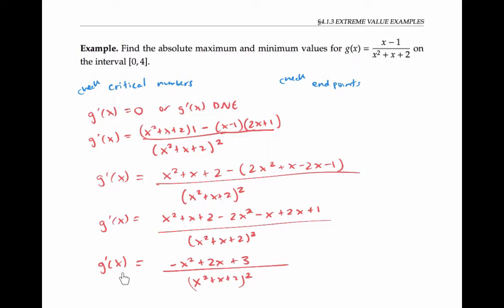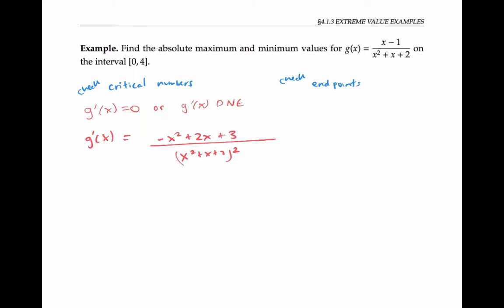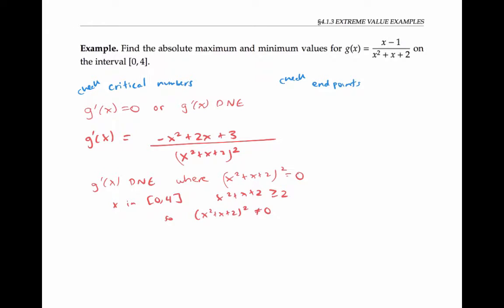Now that I've simplified the derivative, I can figure out where it's equal to zero and where it doesn't exist. The only way that g prime of x could not exist is if the denominator is zero. But on our interval, where x is between zero and four, x squared plus x plus two is always greater than or equal to two, so the denominator is never zero on this interval. In fact, x squared plus x plus two is never zero even outside this interval — you can check that using the quadratic formula. So we don't have to worry about where g prime of x does not exist.